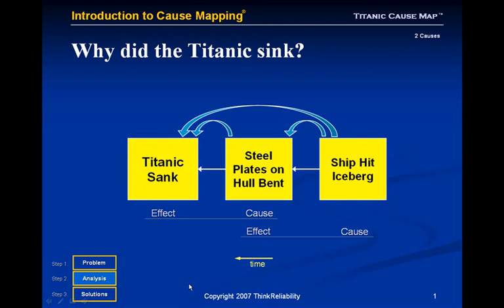In this cause and effect relationship, the Titanic sank because the steel plates on the hull were bent. The steel plates on the hull were bent because the ship hit the iceberg. This means that the steel plates bending on the hull were a cause of the Titanic sinking, but also an effect of the ship hitting the iceberg. That's why some people say it sank because the ship hit an iceberg, and some say it's because the steel plates on the hull were bent. They're both telling the truth, and this is much easier to understand if the cause and effect relationships are laid out visually.